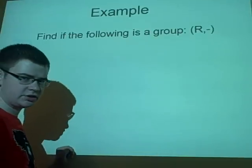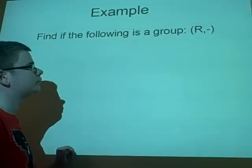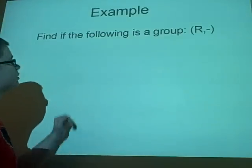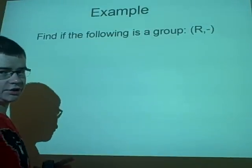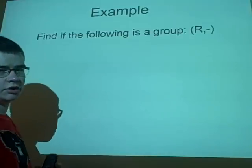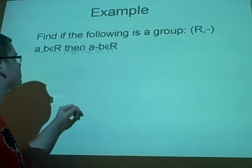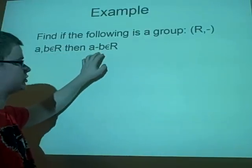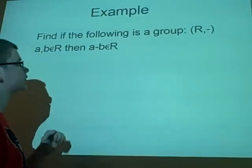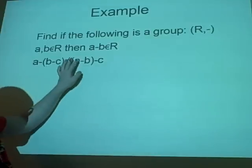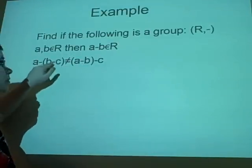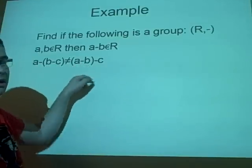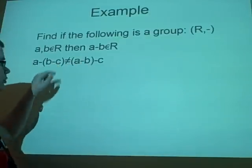Just to end — last lecture I did some examples and none of them failed, so I've got one here that won't work and we'll find out why it isn't a group. Find if the following is a group: the reals under subtraction. First we check closure — if we take two reals and do one minus the other, A minus B, that is also going to be a real. The next one is associativity — this is where we find out it's not a group, because A minus (B minus C) is not equal to (A minus B) minus C because of the way the brackets work. And that's it.